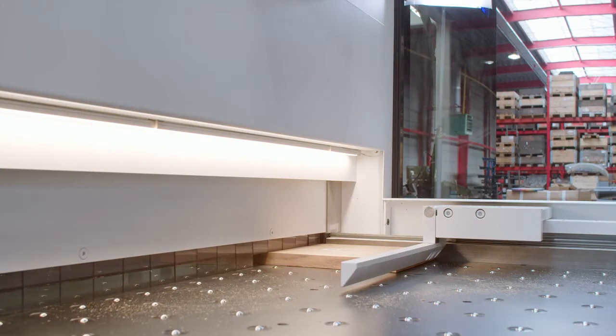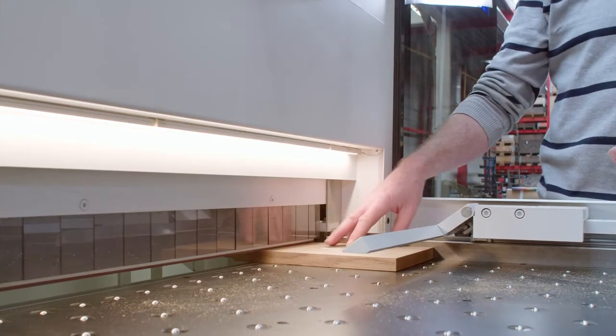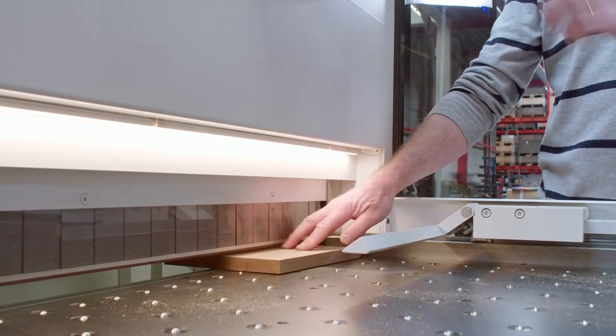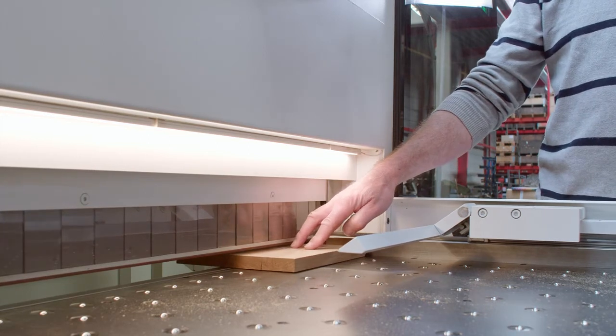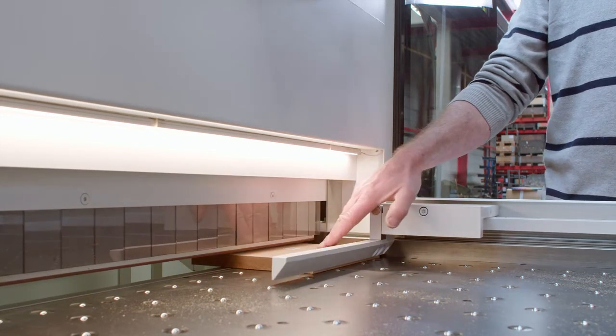The automatic link fence will retract and swivel to create easy access for the operator during clamping. The safety curtain device will first close the working area.